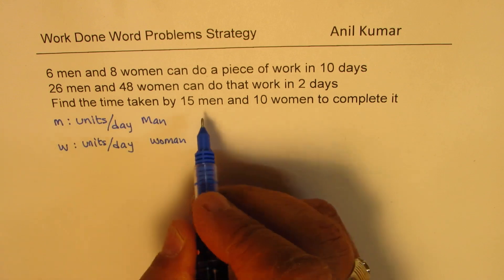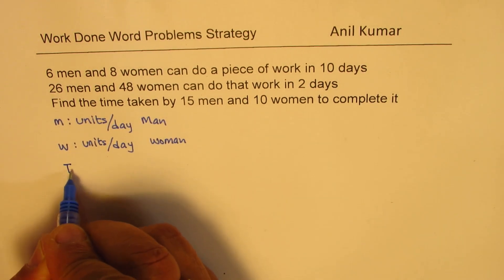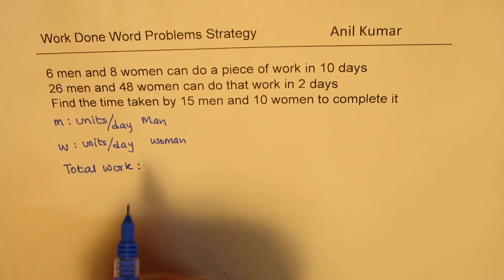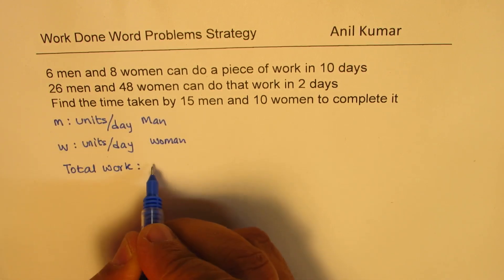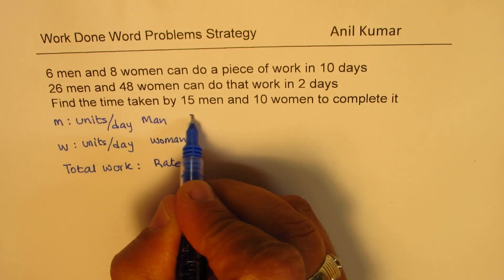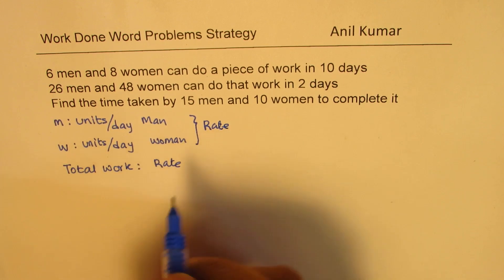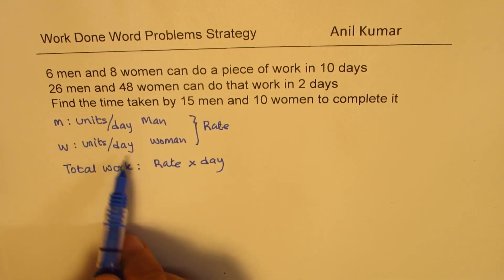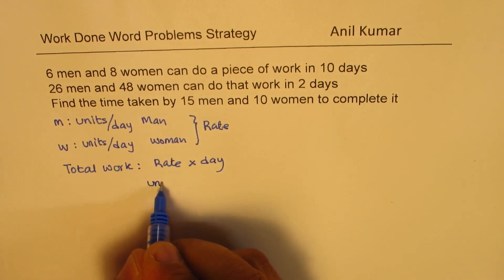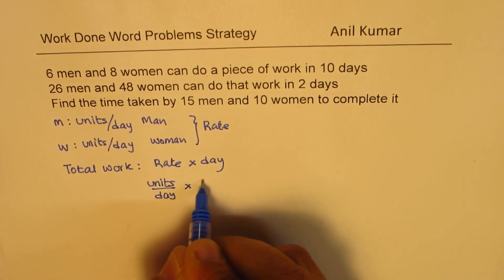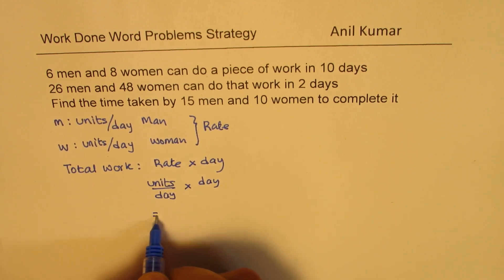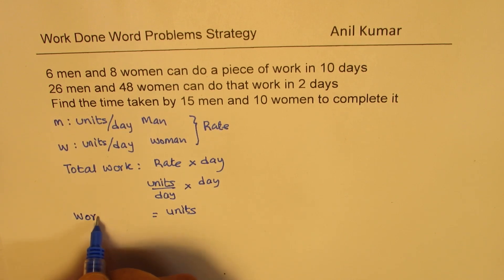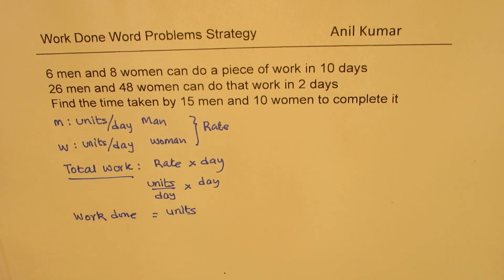The idea here is to find total work. Total work will be rate times days. When you multiply units per day with days — units per day times days — what you get is units. And these units will be called total work, or work done. That is the basic concept to work with.